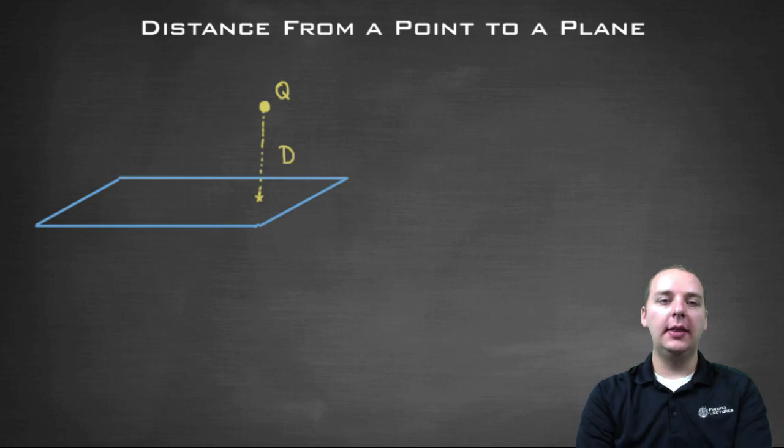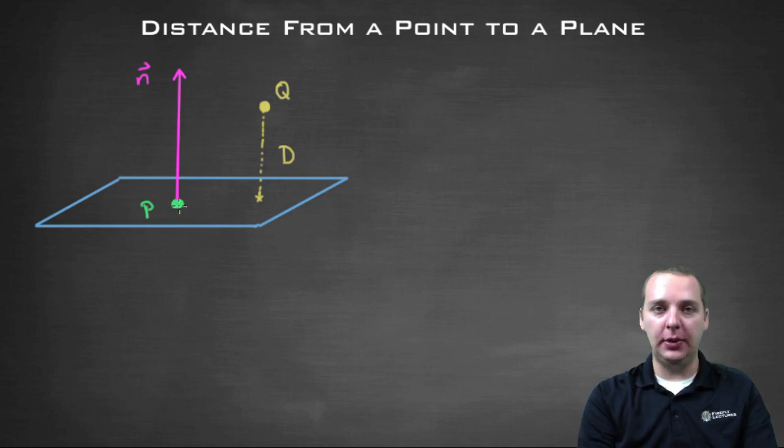You'll remember that when you're given the equation of the plane, one thing you can easily see is a point in the plane. Now you can't just take that point and take the distance from P to Q, because that might not be the shortest distance. But it'll help in just a minute, so just bear with me. I can tell a point in the plane, and then from the equation I can also read off the normal vector to the plane. And we're going to use these two things to our advantage.